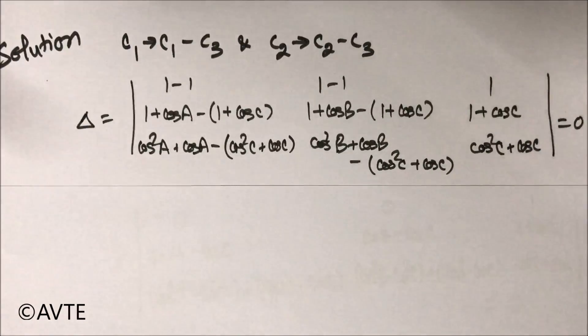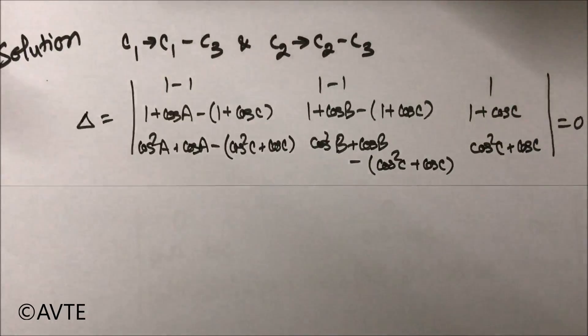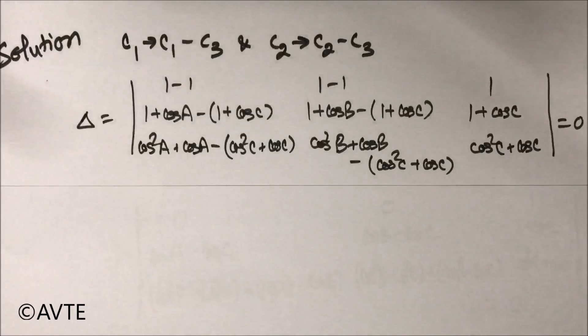So now the first two operations will be, and you can apply them simultaneously. Remember in CBSE, when you are subtracting the same row or column, then you can apply as many operations. Otherwise, you have to go one by one. So clearly the first two operations, you can apply them simultaneously, are C1 goes to C1 minus C3 and C2 goes to C2 minus C3, and that will make two consecutive zeros. And that's a big achievement.